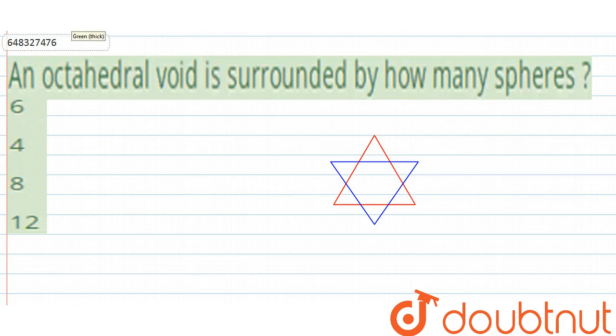We can say that at the center of these two triangles, there will be a void. We are highlighting this void, which is the octahedral void.